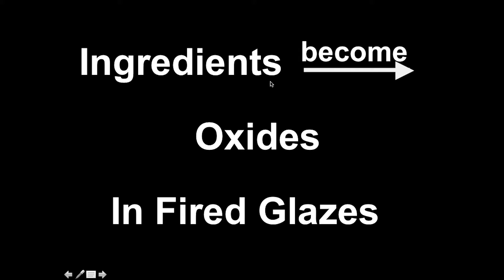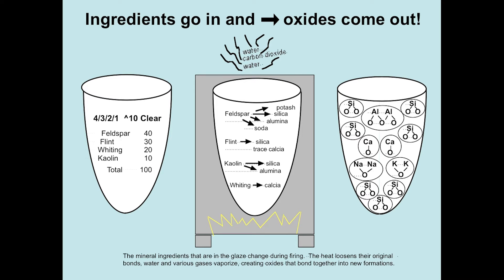There are 35 ingredients that we use to make glazes, and during the firing, ingredients become oxides in fired glazes. So we have 35 ingredients and they turn into oxides, and it's only 12 oxides that we'll be studying. So it's not that difficult. You can see here the 4321 — this is your base glaze that goes into the kiln.